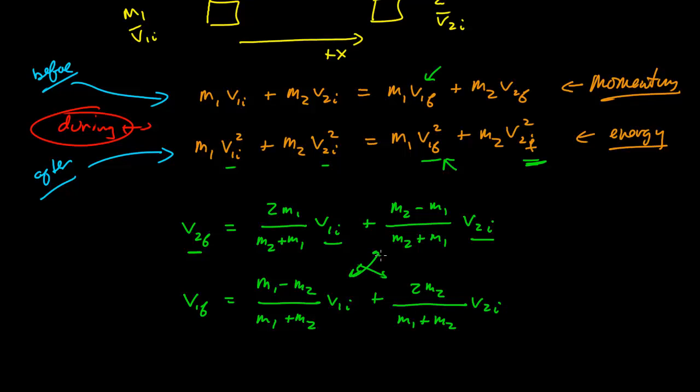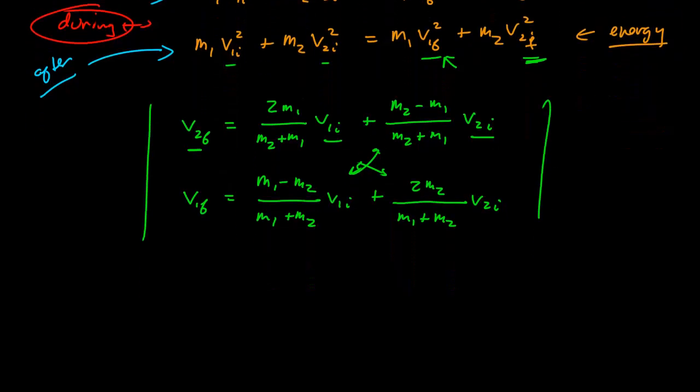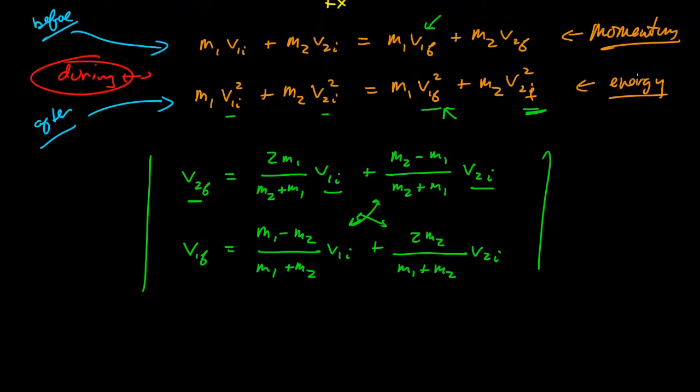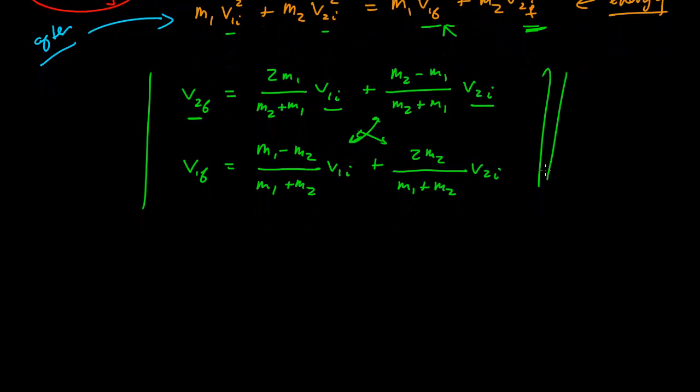This now gives us our final velocities in terms of our initial velocities. And of course, if we're given the final velocities, then we could calculate the initial velocities from this as well. This is now general for any elastic collision between two objects in one dimension, and so we don't have to go back and do all this algebra again. We can go straight to here.